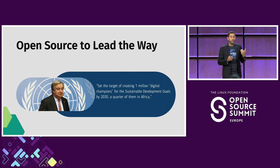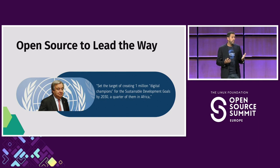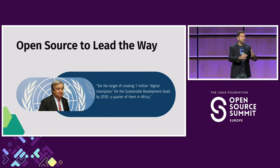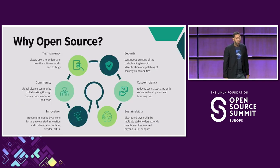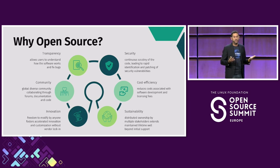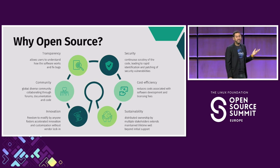None of these goals could be achieved by one country, by one organization. When we say 'we, the people of the UN,' it's not the staff, it's not government — it's really a collective we. This is the power of the open source community. This is why we want help from all of you. Open source is important because it breaks all barriers. This is the real way of building a global community. There's transparency, security, innovation, and also the concept of building communities that is really at the heart of what we do.